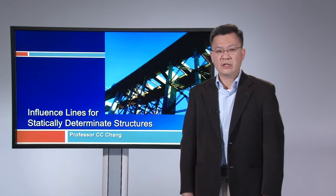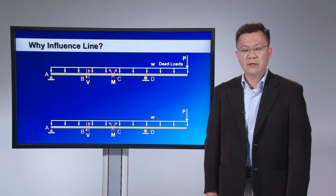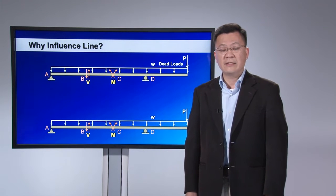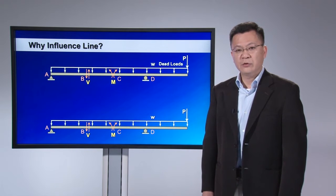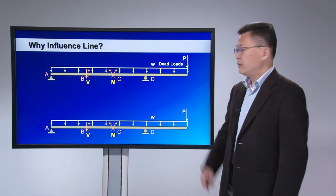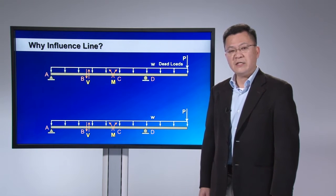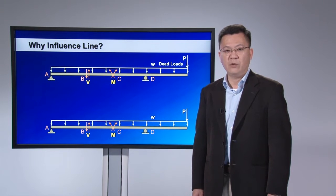In this section, we will discuss influence lines for statically determinate structures. As you well know, civil engineering structures are designed to resist various types of loading, including dead loads, which come in fixed patterns, and the effects of the dead load can be reflected through shear force and bending moment diagrams.